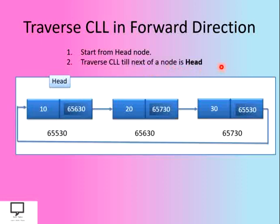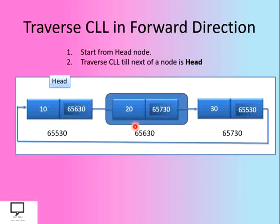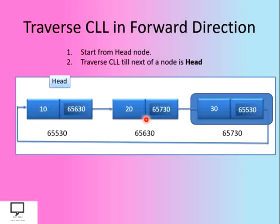We traverse the circular linked list until the next field of a node equals the head node. Let's check this particular node — is it the head node? No, so we can move forward and make this the current node. Let's check whether its next field is equal to the head node. It's not equal to the head node, so we move forward, displaying the information field of the node as we traverse.